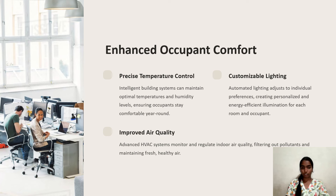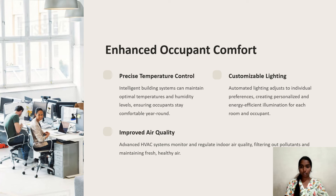Enhanced occupant comfort includes precise temperature control, customizable lighting, and improved air quality. Intelligent building systems can maintain optimal temperatures and humidity levels, ensuring occupants stay comfortable year-round. Automated lighting adjusts to individual preferences, creating personalized and energy efficient illumination for each room and occupant. Advanced HVAC systems monitor and regulate indoor air quality, filtering out pollutants.